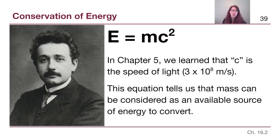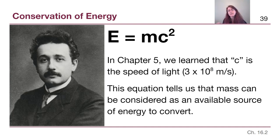When we turn to section 16.2, we come across Albert Einstein's probably most famous equation — not necessarily his most important contribution to science, but the thing most in the public consciousness: E equals MC squared. E stands for energy, M stands for mass, and C is the same speed of light letter C from chapter 5. What this equation is telling us is that mass can be considered as an available source of energy when we consider conservation of energy.